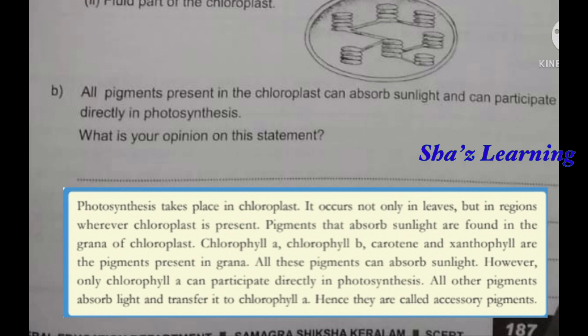All the pigments can absorb sunlight. However, only chlorophyll A can participate directly in photosynthesis. Chlorophyll B, carotene, and xanthophyll absorb light and transfer it to chlorophyll A. So the other pigments act as accessory pigments, channeling absorbed light energy to chlorophyll A.